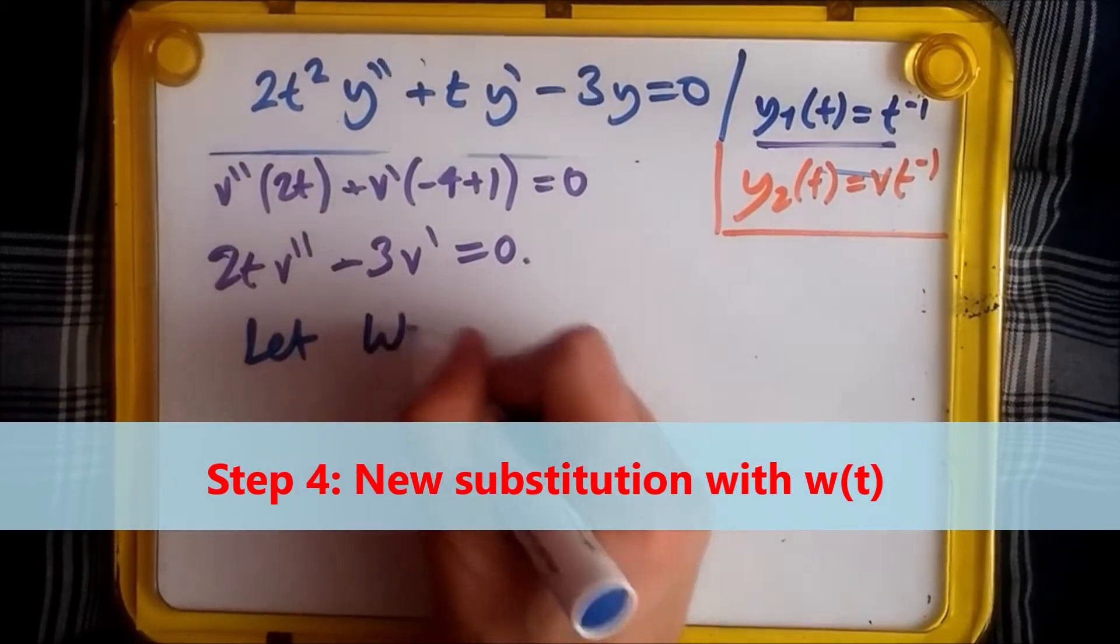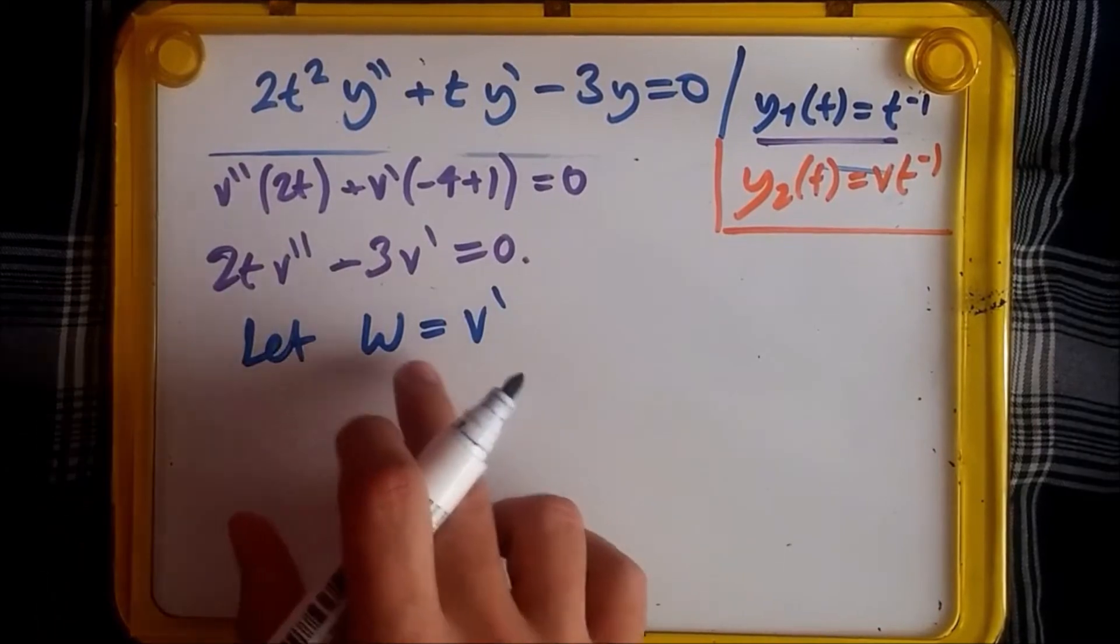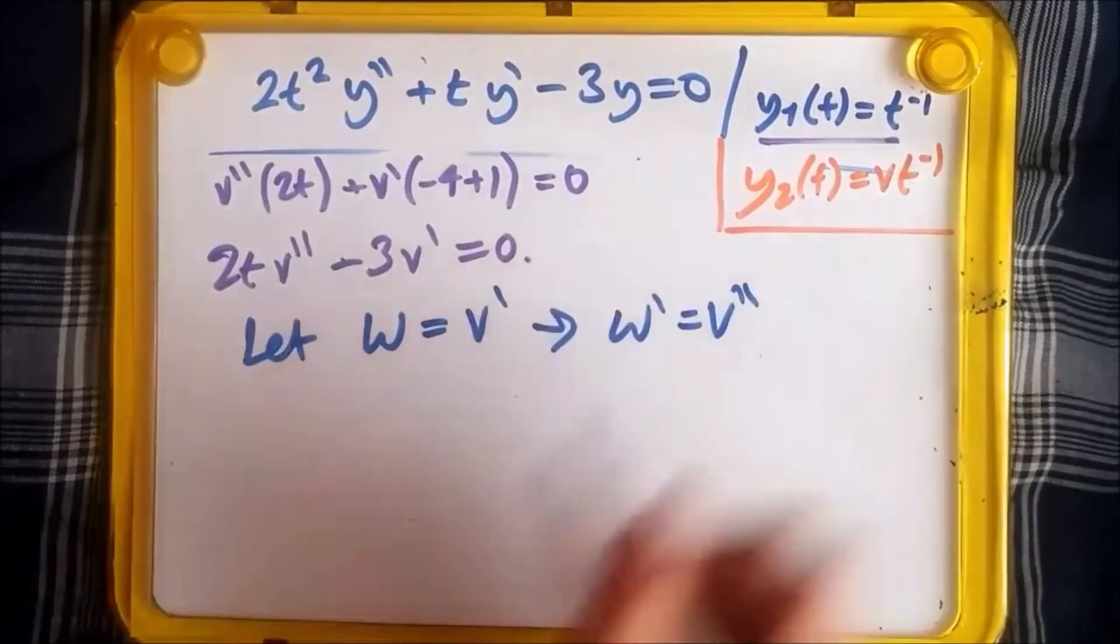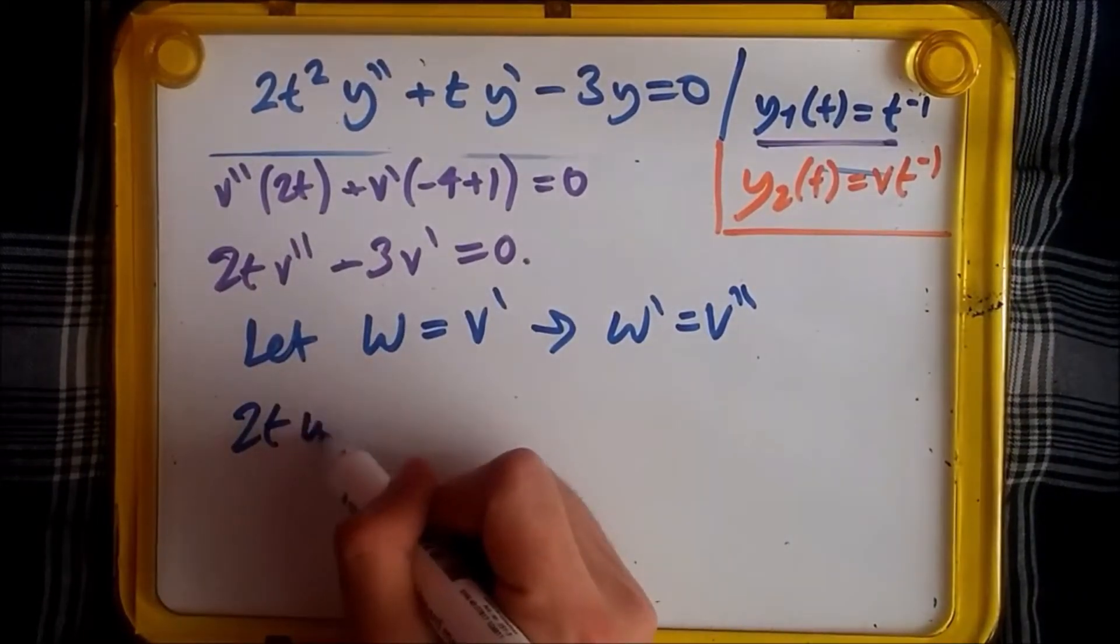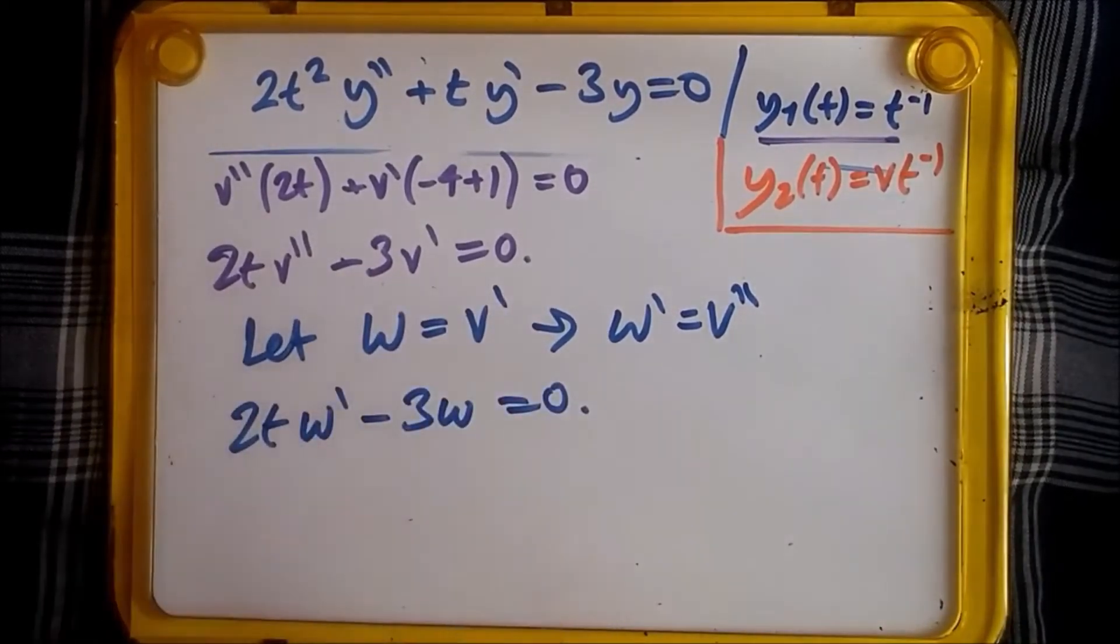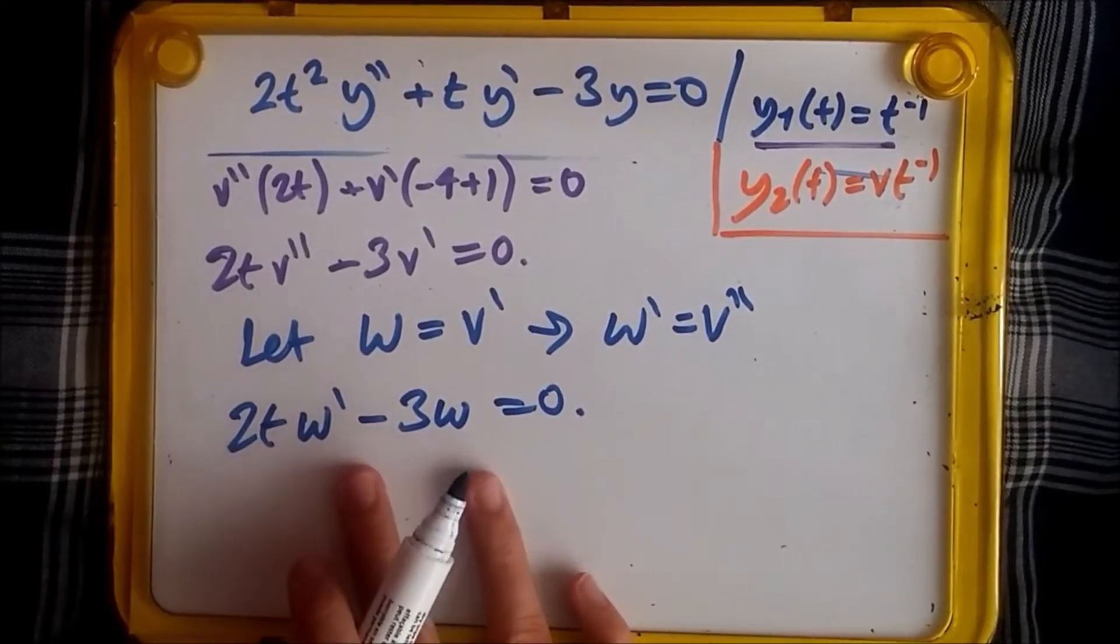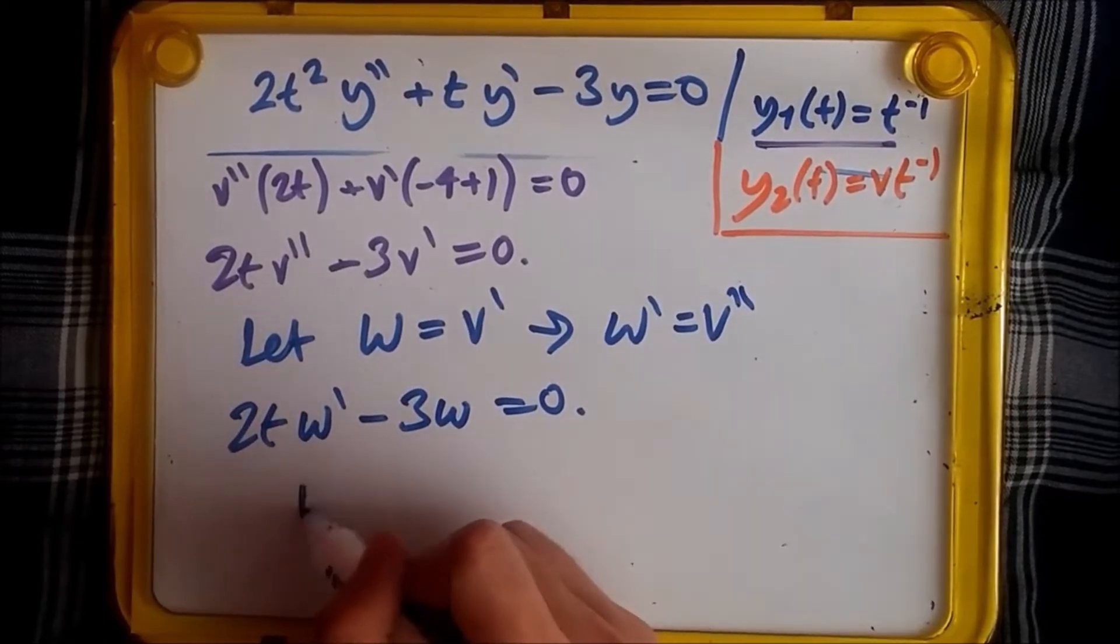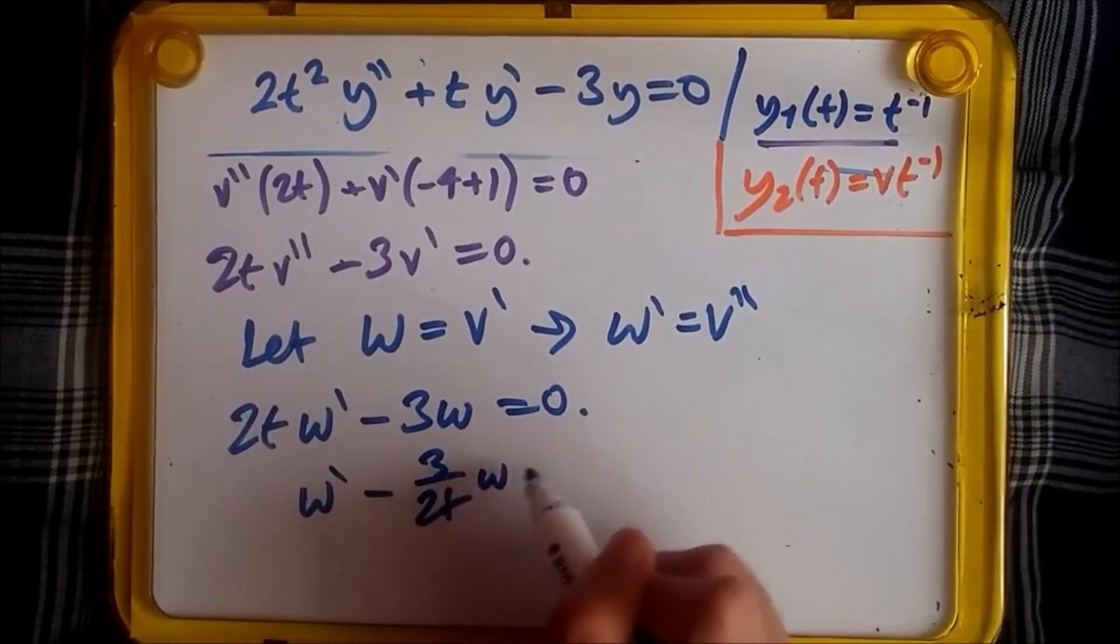Let w be our new variable, and this should equal v prime. Because of this, the first derivative of w is of course the second derivative of v. Replacing this equation, we should have 2t times w prime minus 3w equals zero. So w prime - and voila, now we have a first order ODE. To make it perfect, we should divide everything by 2t. So it should be w prime minus 3 over 2t times w equals zero.